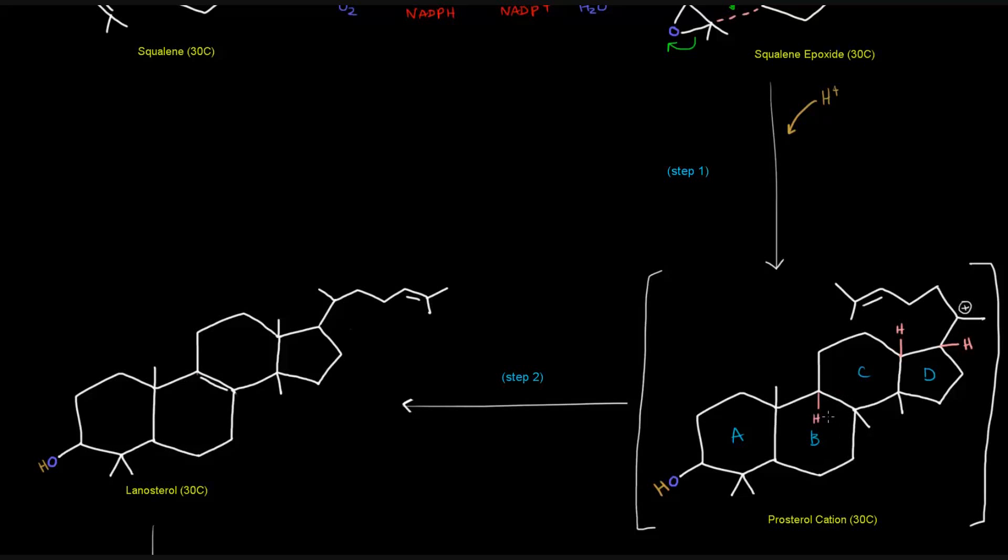So you can kind of see how cholesterol might result from this. Now, obviously, it doesn't look exactly like cholesterol. There's some methyl groups here, and there's this double bond that doesn't need to be here, and it's not exactly cholesterol quite yet, but you can see how this would come about.